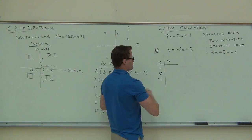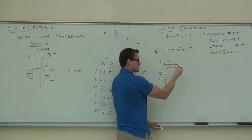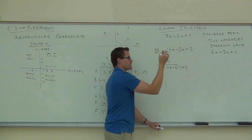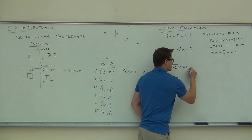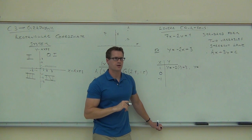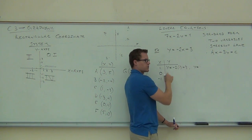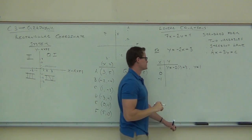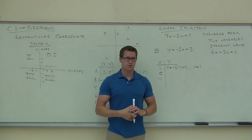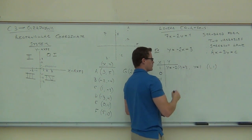Let's evaluate our equation — say y equals negative 2x plus 3 — for x equals 1. We plug in: y equals negative 2 times 1 plus 3, so negative 2 plus 3 equals 1. We have an X coordinate of 1 and a Y coordinate of 1, so our point is (1, 1).